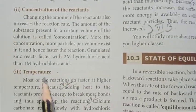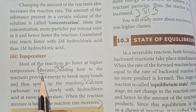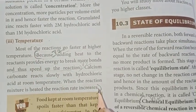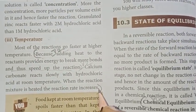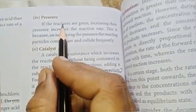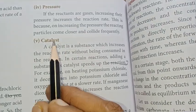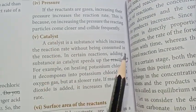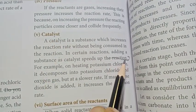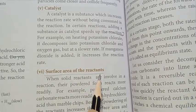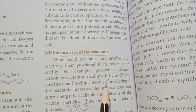Temperature, because adding heat. Then pressure. Next: catalyst. The surface area of the reactants are the important factors influencing the rate of reaction.